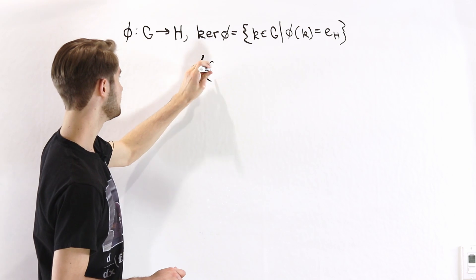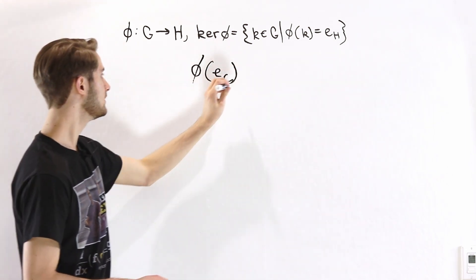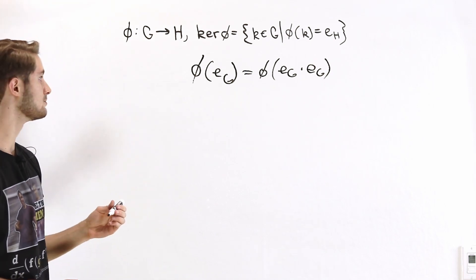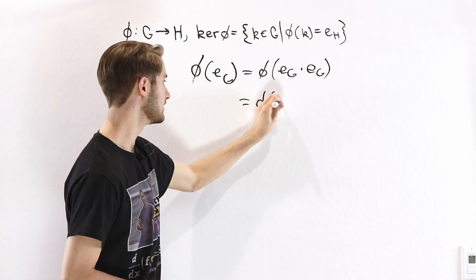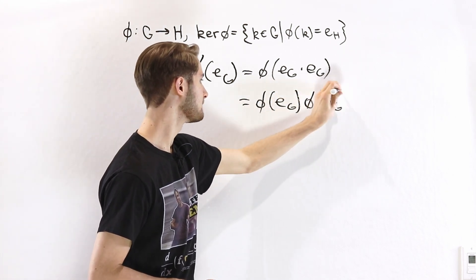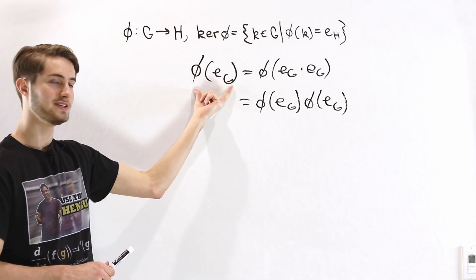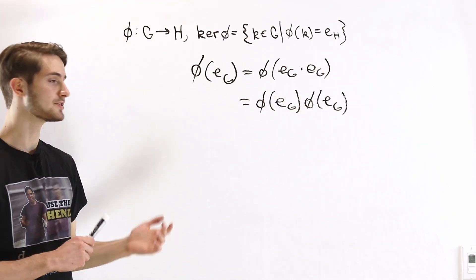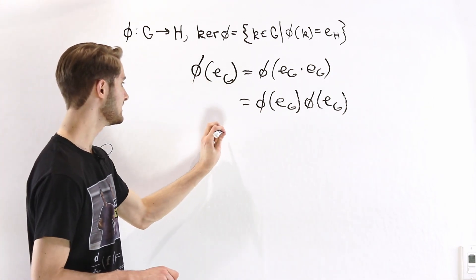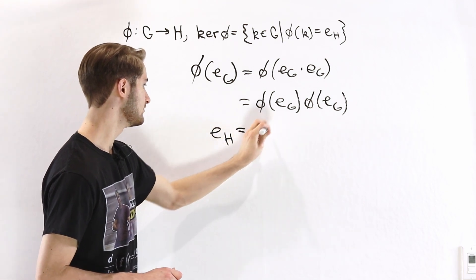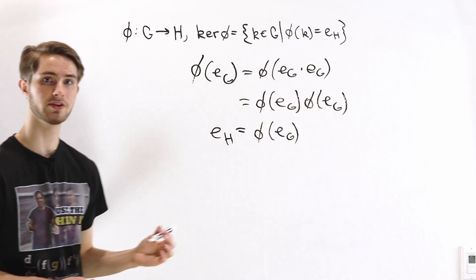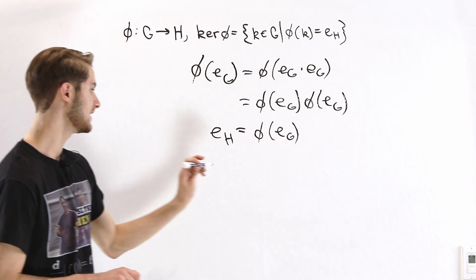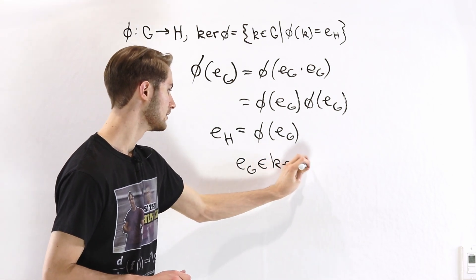What is phi of the identity element in G? We know the identity element in G equals EG times EG. Because phi is a homomorphism, we can split this up: it becomes phi of the identity times phi of the identity. We can cancel on both sides — multiplying by the inverse — to get that EH equals phi of EG. This means a homomorphism always maps the identity in G to the identity in H, and therefore EG is in the kernel.